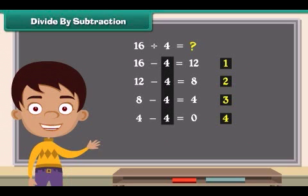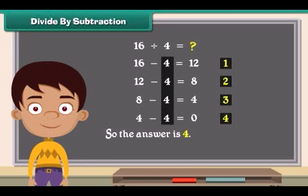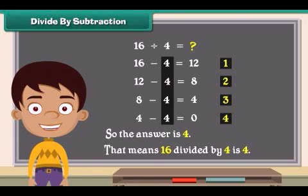Four 4s have been subtracted. So the answer is 4. That means 16 divided by 4 is 4.